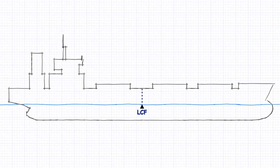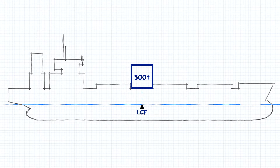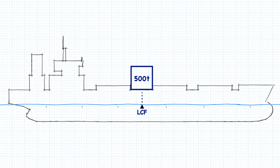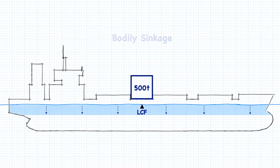If we add a 500 ton weight to the ship, but it's directly over top of the center of flotation, it shouldn't cause any change to the ship's trim, because there's no turning moment created. But that doesn't mean that the weight is not having an effect on the ship's drafts. The ship will still sink bodily into the water, meaning the drafts change without any change of trim.